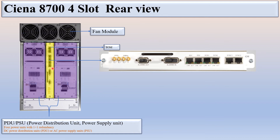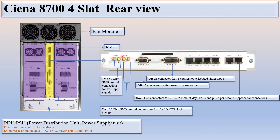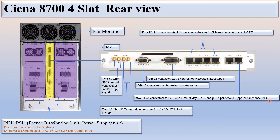This is the IOM — the interface input/output module. The first two ports: 1 PPS is a 250-ohm SMB coaxial connection for TOD or 1 PPS signals. 10 MHz is a 250-ohm SMB coaxial connection for 10 MHz GPS clock signals. There is a DB15 connector for external alarm outputs and a DB26 connector for 16 external opto-isolated alarm inputs. Sync 1 and Sync 2 are 2x RJ45 connectors for RS422 time-of-day and 1 PPS serial connections. ES1, ES2, DCN1, and DCN2 are 4x RJ45 connections for Ethernet switch on each CTX.